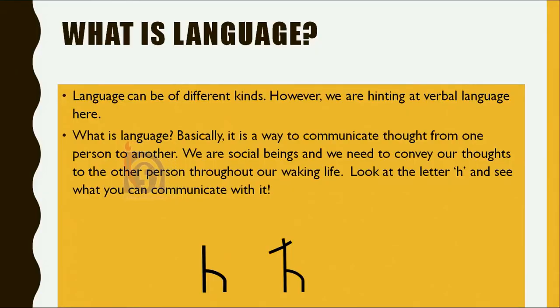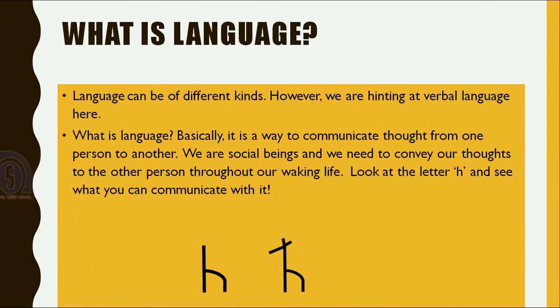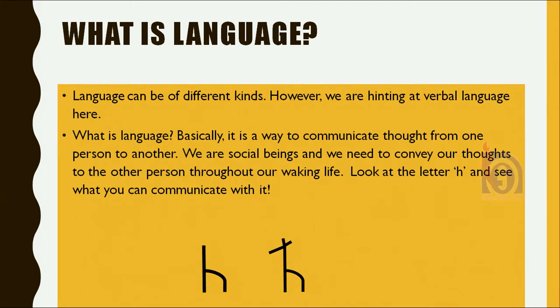What is language? Language can be of different kinds, but here today we are hinting at verbal language. Language is a way to communicate thought from one person to another. We are social beings — we need to convey our thoughts to others throughout our waking life. Look at the letter H here and see what you can communicate with it. You add a little line diagonally across and it almost becomes H for horse. There are different types of communication.